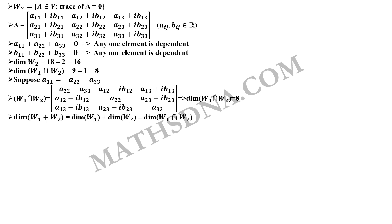Thus, dimension of W1 plus W2 will be equal to dimension of W1 plus dimension of W2 minus dimension W1 intersection W2 which sums up to 9 plus 16 minus 8 and which is equal to 17. That is our option A. Required answer.